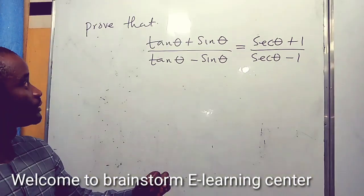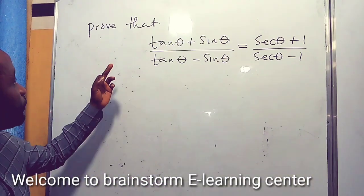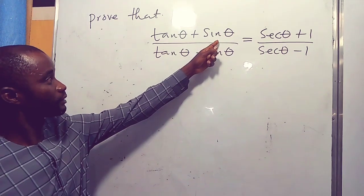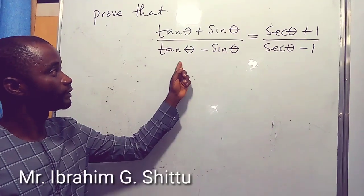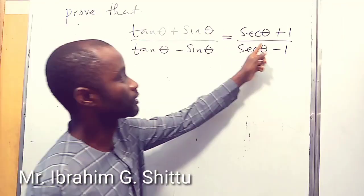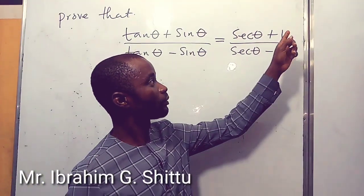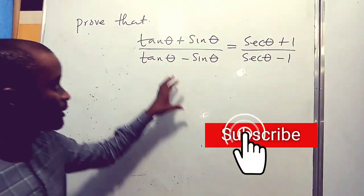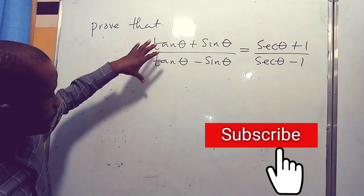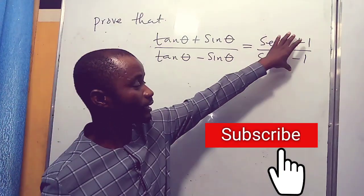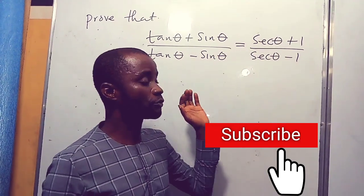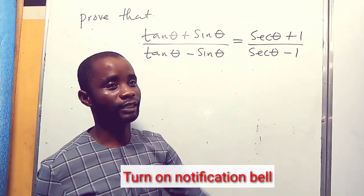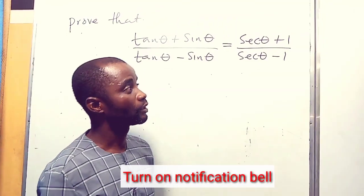Hello guys, let's see how you can prove that tan theta plus sine theta over tan theta minus sine theta equals sec theta plus one over sec theta minus one. This side is the left hand side and this side is the right hand side. We want to show how the left hand side equals the right hand side.